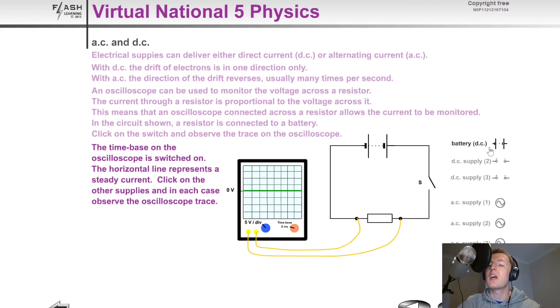If however we open the switch and replace our DC battery with an AC supply, then you'll notice if I close the switch, we then get a wave pattern showing that the output voltage is not constant, that it's changing.